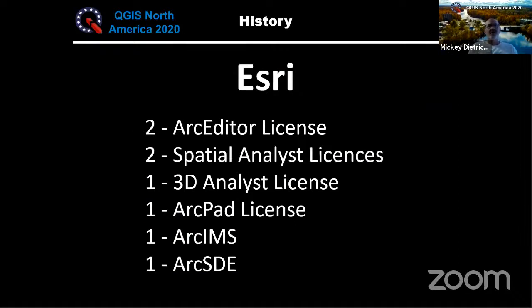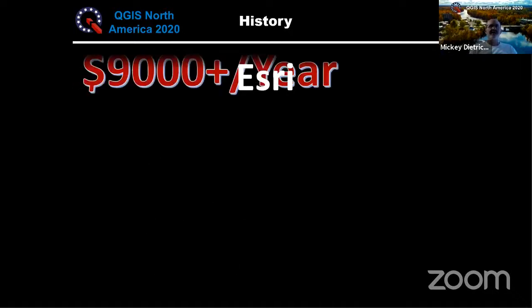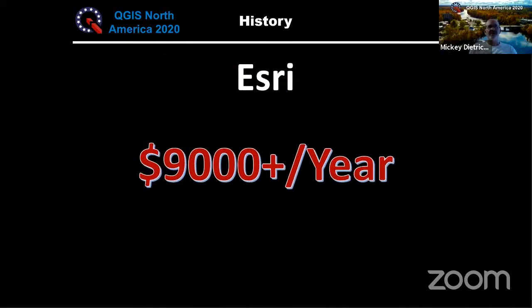On the history — we started off with ESRI. I started at Tug Hill Commission in 2002, and at that point we had two Arc Editor licenses, two Spatial Analyst licenses, one 3D Analyst license, one ArcPad, and then ArcIMS and ArcSDE for our online map viewer starting around 2007. We got to the point where we had over $9,000 per year in yearly maintenance. For a smaller organization like us, our computer budget was maybe only about $12,000 per year, so that eats up quite a bit of your budget just on software maintenance.